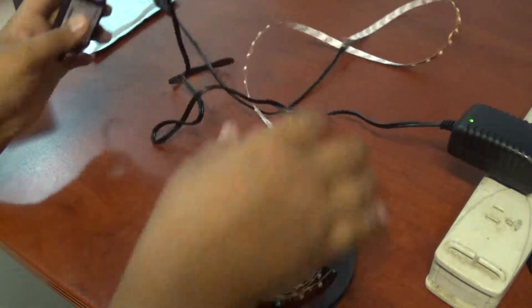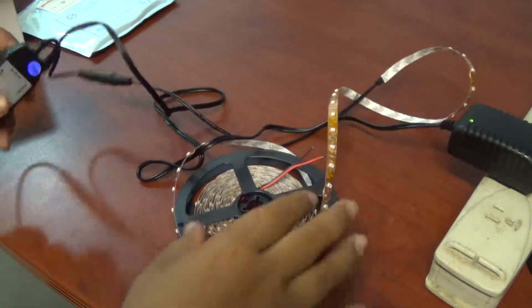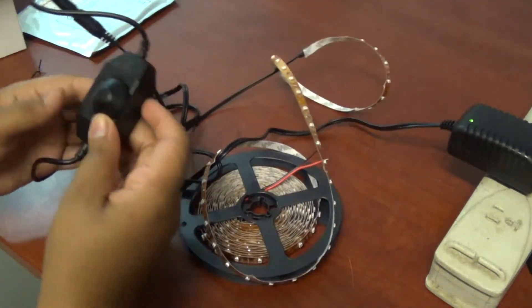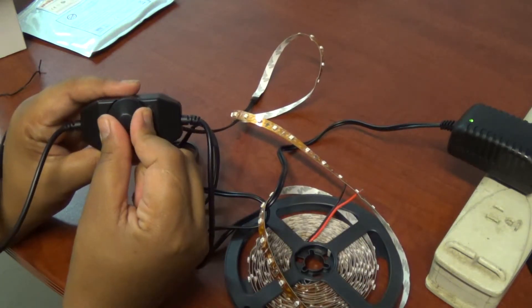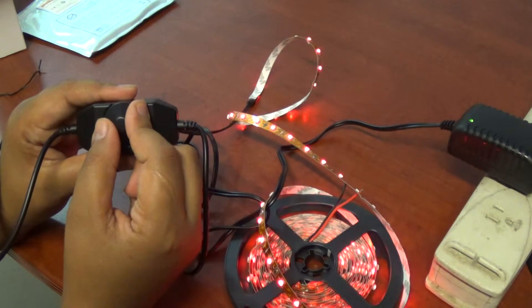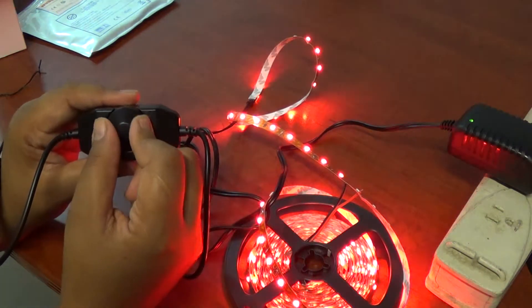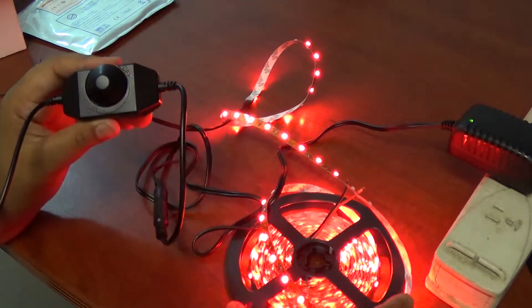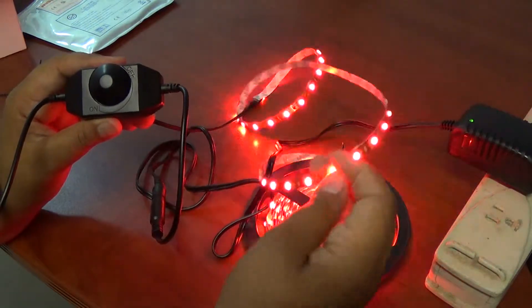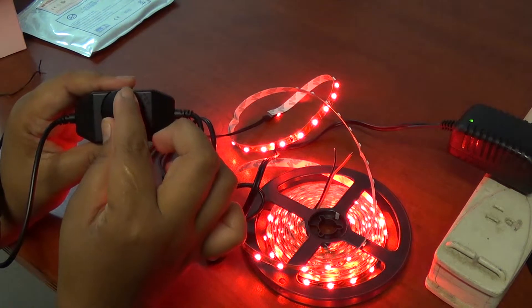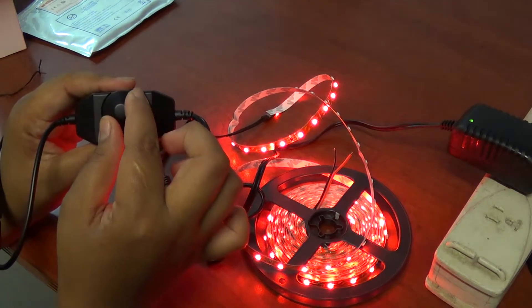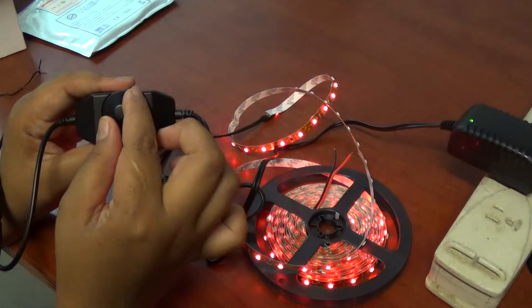Now we're going to show you your LEDs using the dimmer light. You just turn it clockwise, and it turns on. As you can see, this is all the brightness it has. You could go less, little by little, just like that.